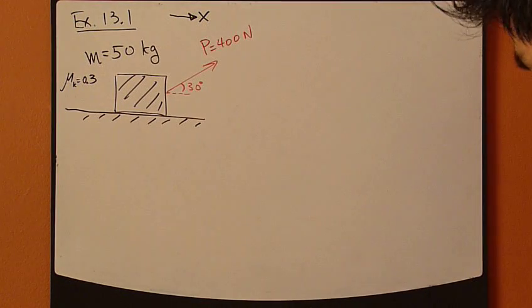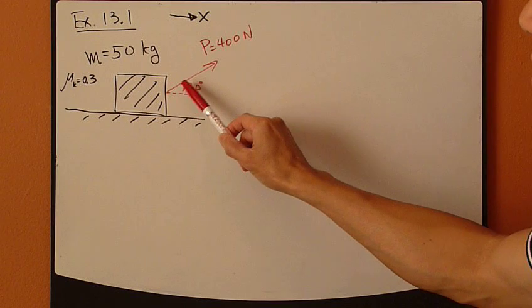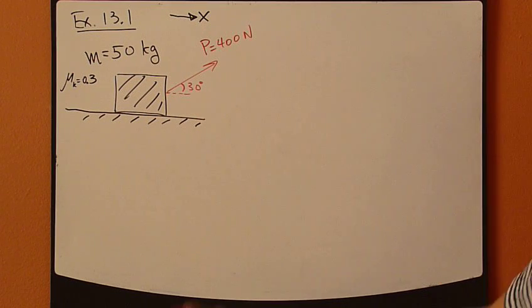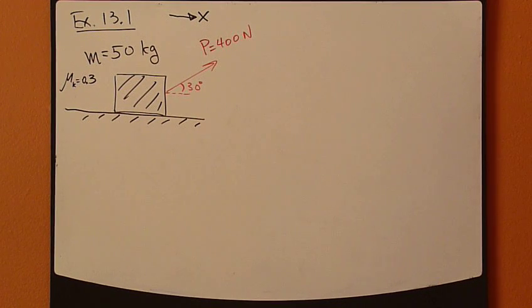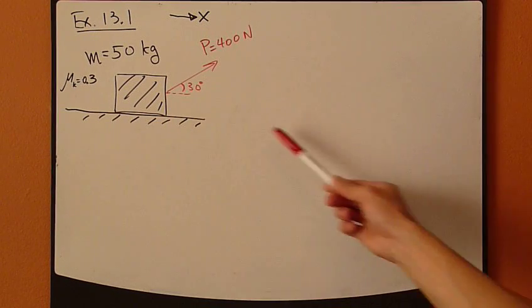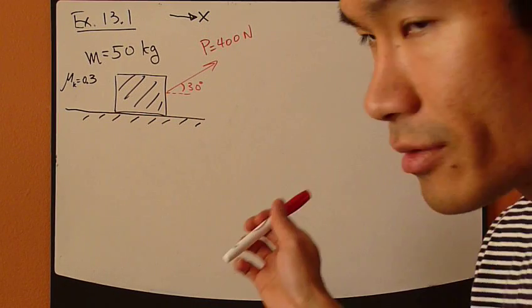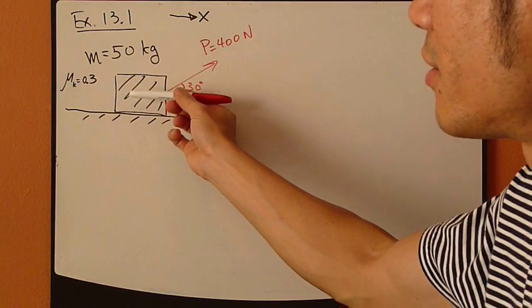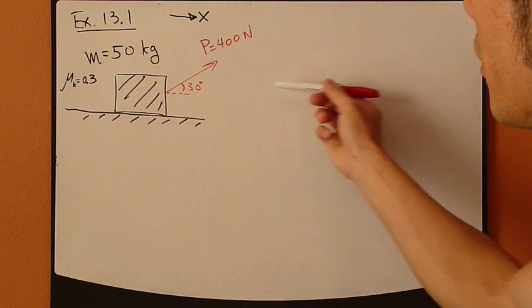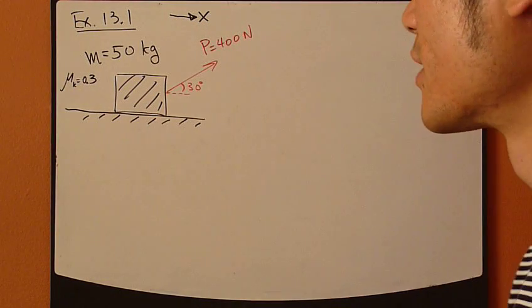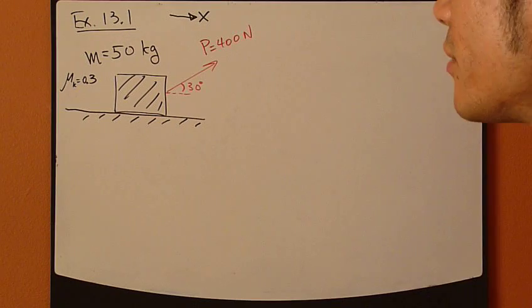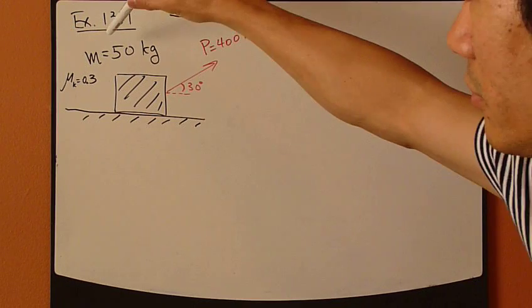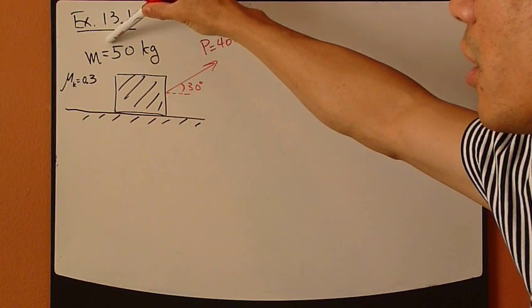Now, you use this crate right here and it's subject to a pulling force of 400 Newton, and it's sliding on the ground. And obviously, you can imagine that this crate is going to go this way, it's going to slide to the right horizontally. The mass of the crate is given, 50 kilograms.